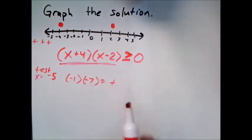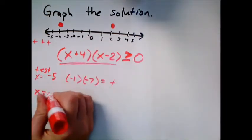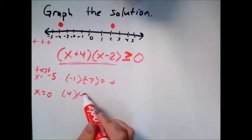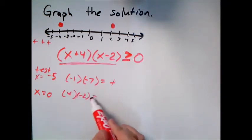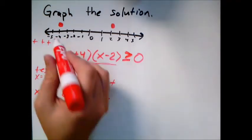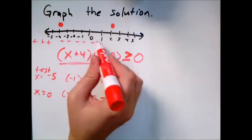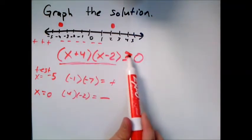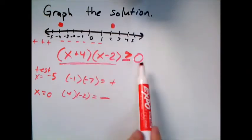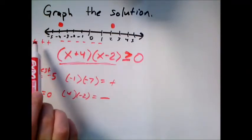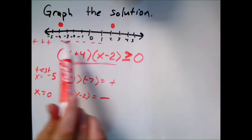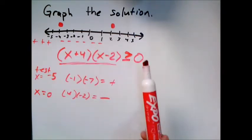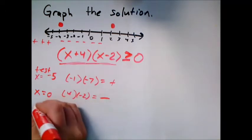Now let's pick something in between — zero is always a good candidate. Putting in zero gives four times negative two, which is negative. Why aren't we computing the full number? Because we're finding when this is greater than or equal to zero — that means when is it positive? So we only need to know the sign, not the exact value.